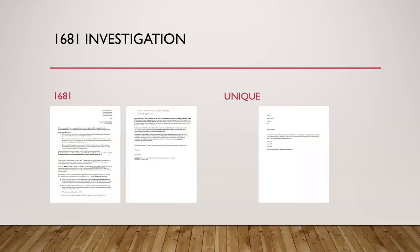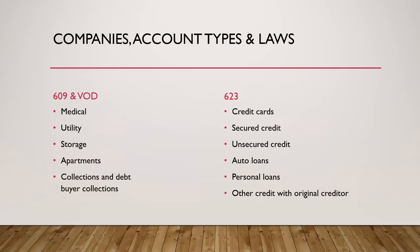The next one is the 1681 investigation — this is the same stuff you're going to find when you purchase bureau templates. The 1681 is simply a section that states you have the right to an investigation of inaccurate information. If you purchased a series of disputes to the bureaus, they probably look like the law-heavy template on the left — 'pursuant to this, Congress says that' — just like those section 609 disputes that don't actually give a reason. On the right, it simply states: 'These accounts are unknown or inaccurate — please delete them.'